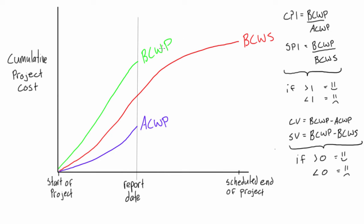The point of this video is how to interpret an earned value graph visually. BCWP, ACWP, and BCWS can all appear in different orientations. Importantly, the only line that can extend to the very scheduled end of the project is BCWS — the budgeted cost of work scheduled — because you can predict how much it's going to cost. You don't know anything about the work actually being performed until you have a field report, so BCWP and ACWP cannot go beyond the reporting date.